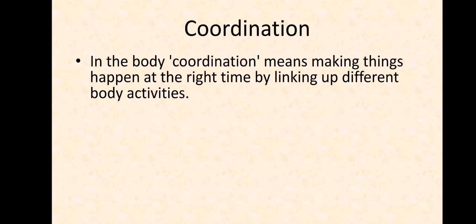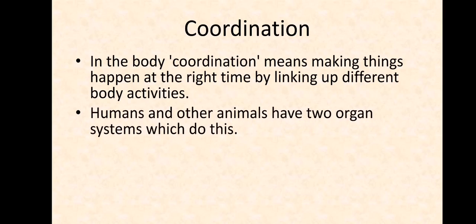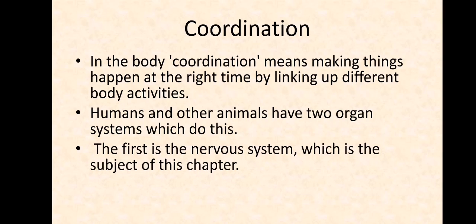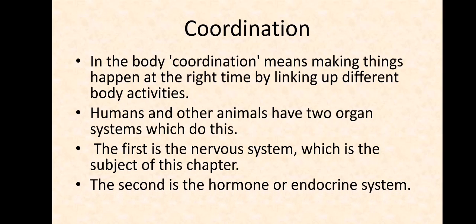Coordination means making things happen at the right time by linking up different body activities. Humans and other animals have two organ systems which do this. The first is the nervous system, which is the subject of this chapter, and the second is the hormonal or endocrine system, which we'll talk about in the next chapter.